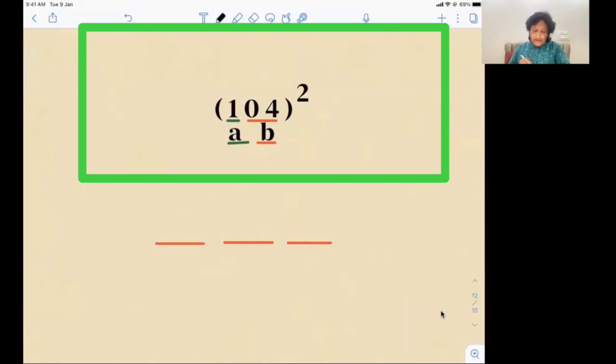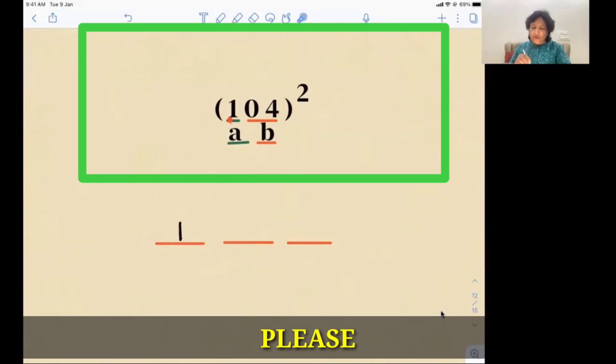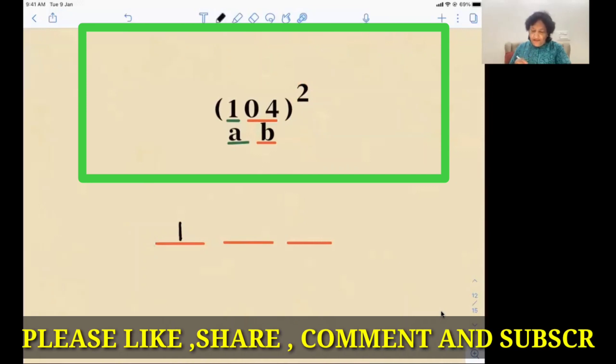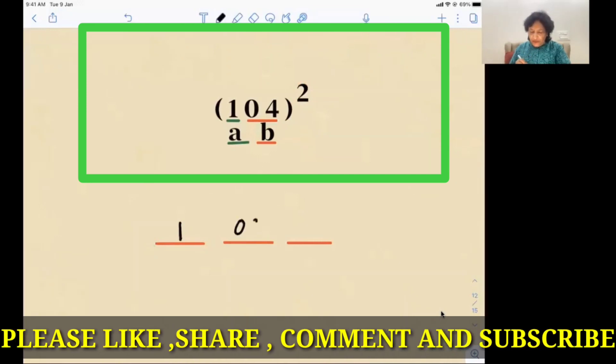And now the next second step is a into b twice, that means twice a into b. So a is one, b is zero four, so two four. Four into one is four, into two is eight, so we have eight. But we'll put zero eight over here, because in this case we are having two digits together as b, so we need to have two digits over here.